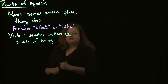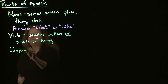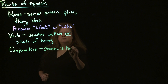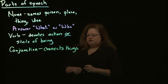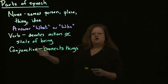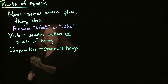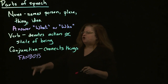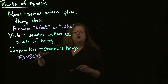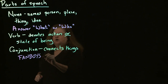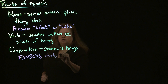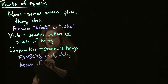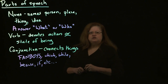Another part of speech is a conjunction. A conjunction is something that connects things. We have several types of conjunctions. There are the coordinating conjunctions, which you may also know as the FANBOYS — for, and, nor, but, or, yet, and so. There are also other kinds of conjunctions called subordinating conjunctions, which are things like 'which,' 'while,' 'because,' or 'if.' Those are also conjunctions, just a different kind.